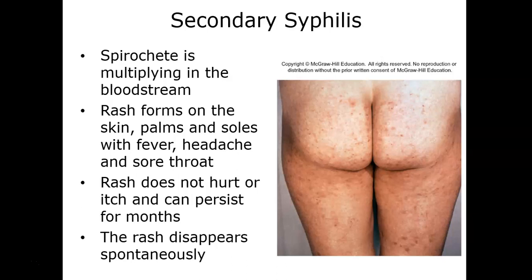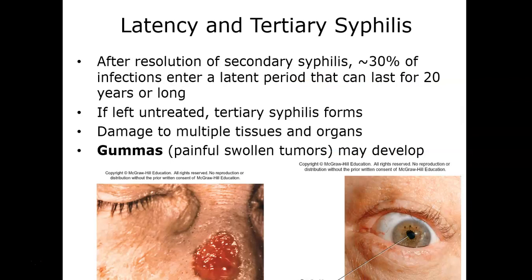Secondary syphilis is where the bacteria are now multiplying within the bloodstream. The characteristic symptom is a red to brown colored rash that forms on the skin, palms, and soles of the feet, along with fever, headache, and sore throat. The rash doesn't hurt or itch and can persist for very long durations. Cases of lymphadenopathy also occur during this stage.